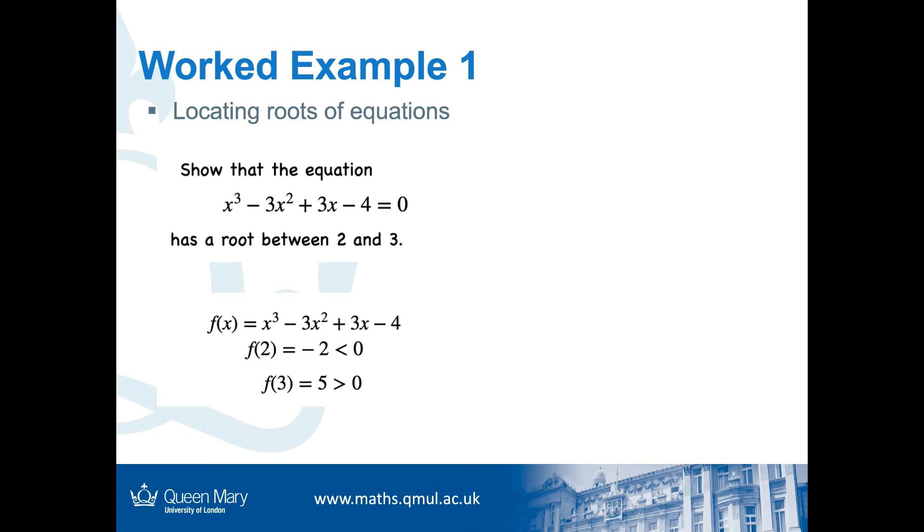And then we calculate the function at x = 2 and x = 3. So f(2) = -2, which is negative, and f(3) = 5, which is positive. So we have one negative value and one positive value. Since this function is continuous, we can say that it has a root between 2 and 3. To visualize this function, we can find that it actually has a root between 2 and 3 here.